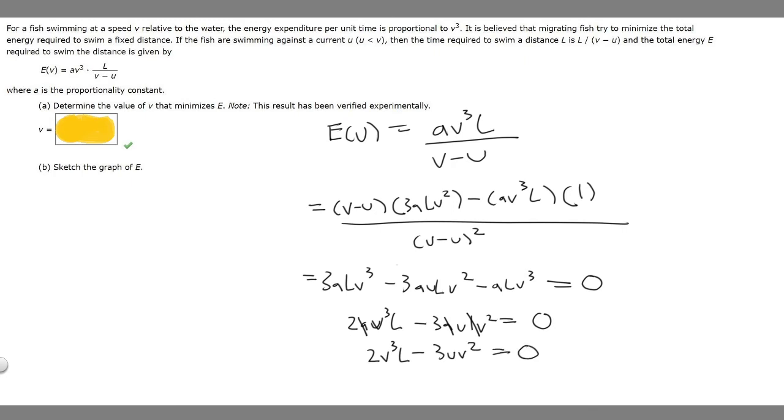Now what we can do is factor out a v². If we go ahead and do that, I'm going to start writing up here. We'll have v²(2v - 3u). This is going to be equal to zero.